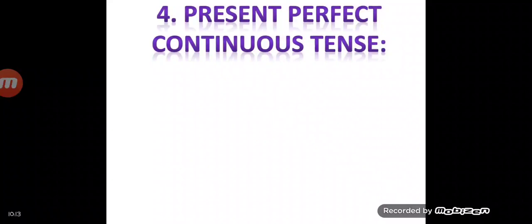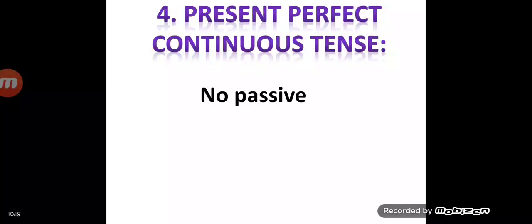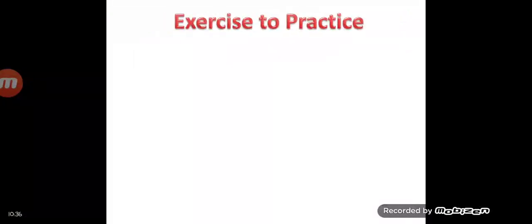As I mentioned, there is no passive voice for present perfect continuous tense. If a sentence in active voice is in present perfect continuous tense, you write that it has no passive — you cannot change it into passive voice. Let's now start with the exercises.